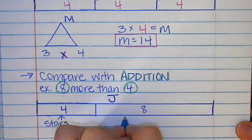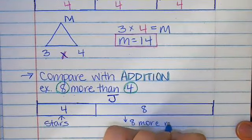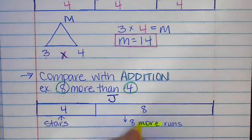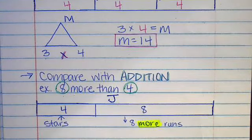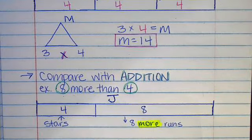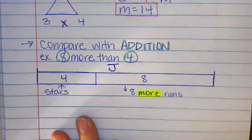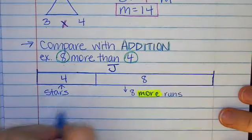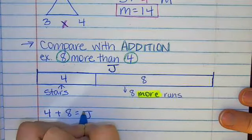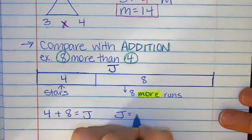And then she says that the Rangers did eight more. So this would be the eight more section. So when I'm doing that, I'm knowing that this and this together is going to be equaling what we get at the very top of our bar diagram. So here we go. I'm going to do four plus eight equals J. And I know that four plus eight is 12. So J equals 12.